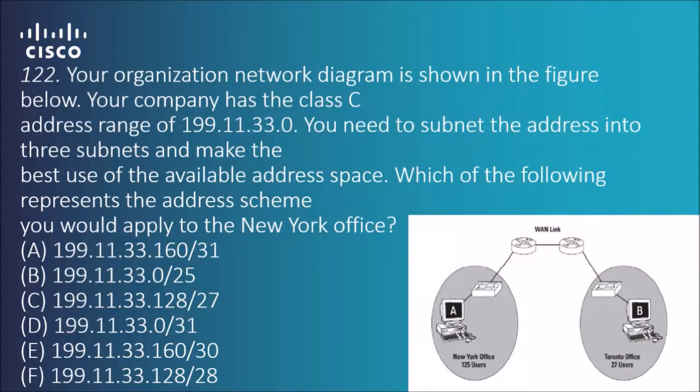Question 122: Your organization network diagram is shown in the figure below. Your company has the class C address range of 199.11.33.0. You need to subnet the address into three subnets and make the best use of available address space. Which of the following represents the address scheme you would apply to the New York office?